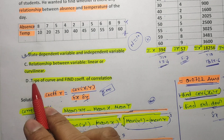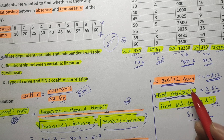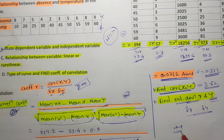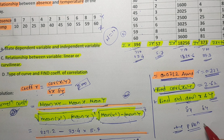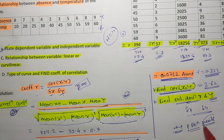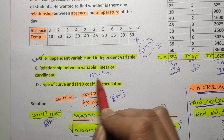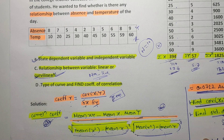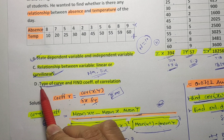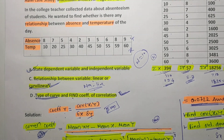Now, is the relationship linear or curvilinear? Our r = 0.722, which is a positive value, so there is a positive relationship. However, 0.722 is not very close to 1, indicating a weak positive relationship. This means the relationship is non-linear, i.e., curvilinear. So the answer is: curvilinear (non-linear) relationship.